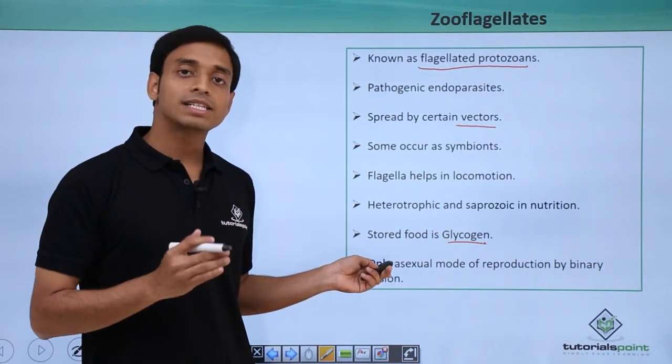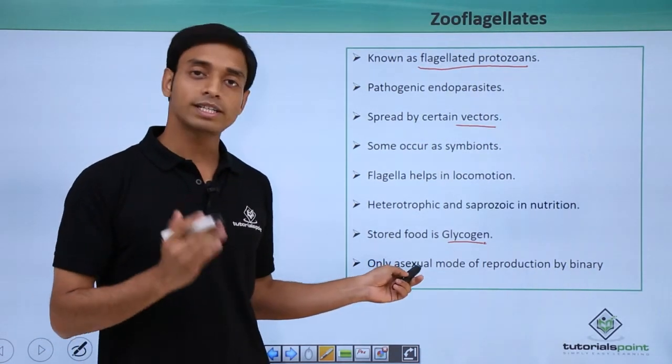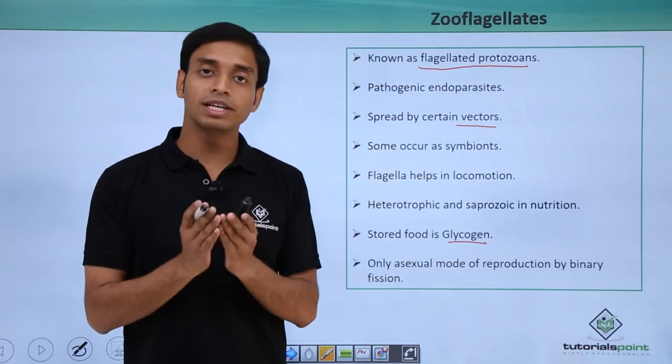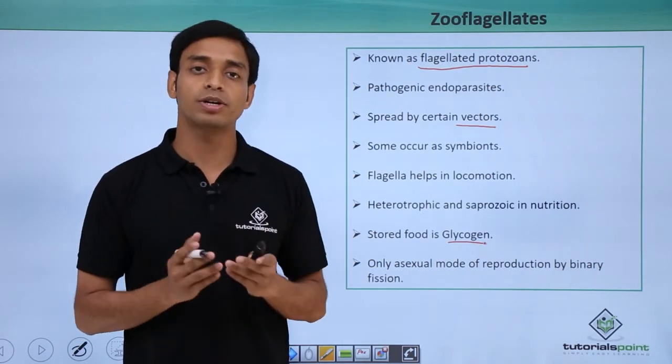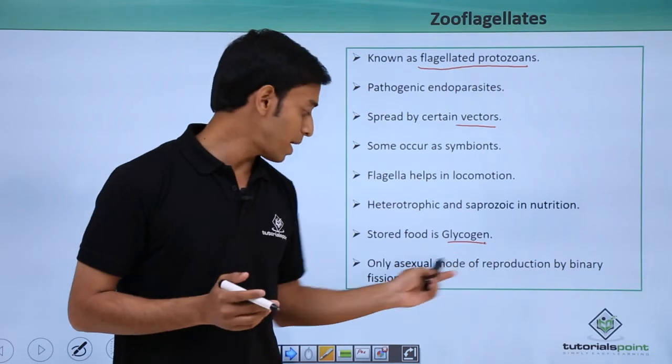These type of organisms reproduce only through asexual mode, and the most commonly used mode of reproduction asexually is binary fission.